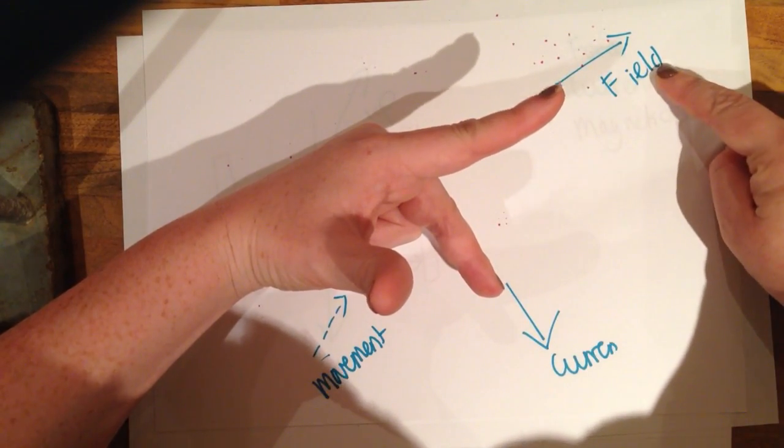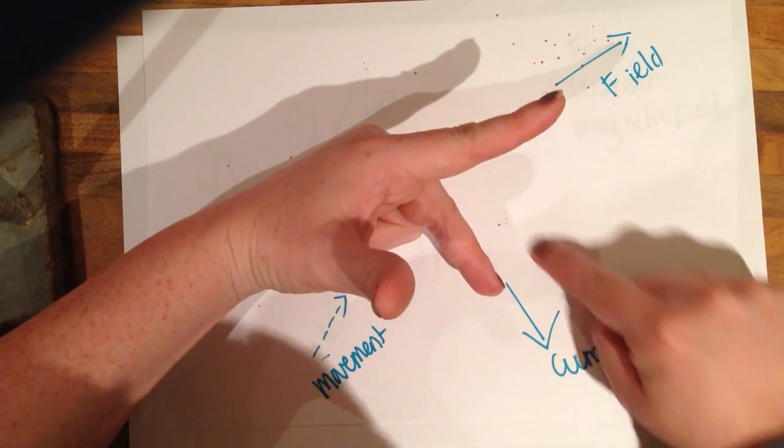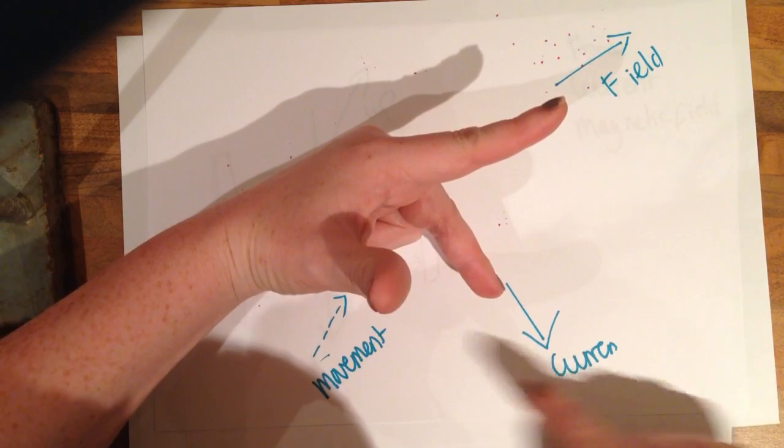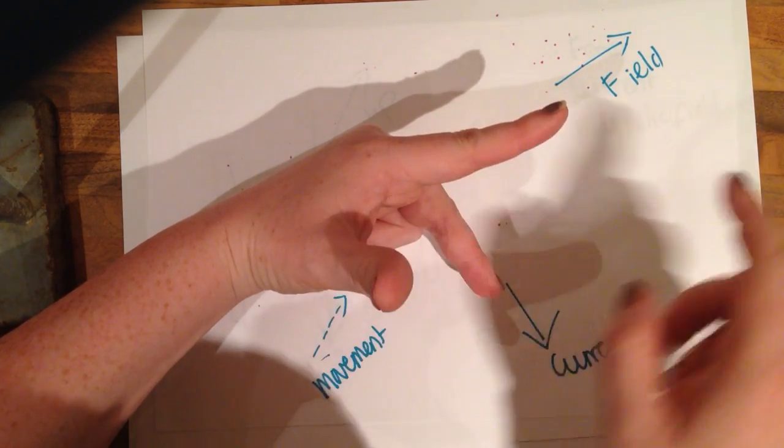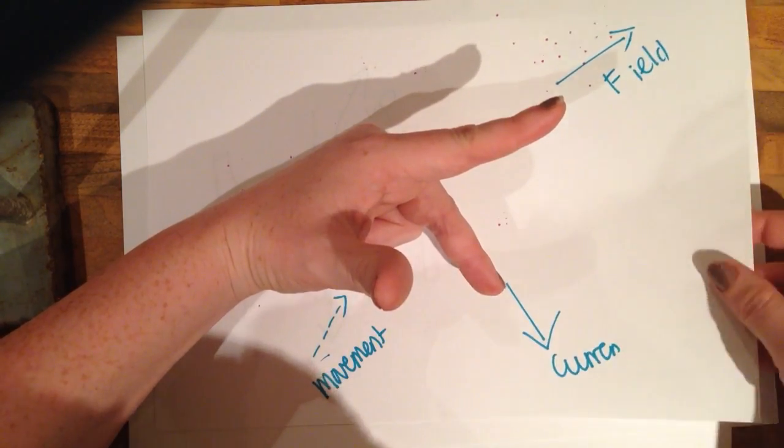So my first finger always points the direction of the field. My second finger always points in the direction of the current and then my thumb, which is currently coming up towards you, points in the direction of the movement.